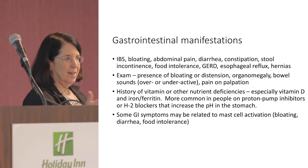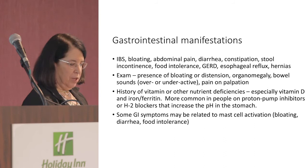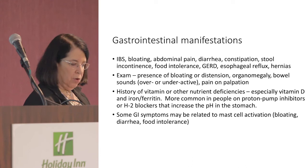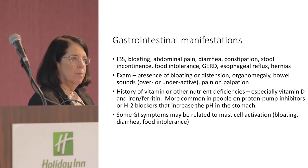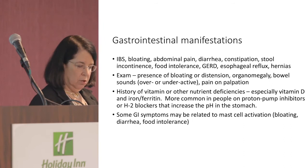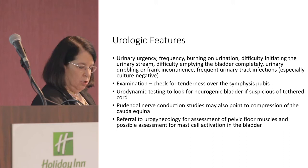Gastrointestinal manifestations are numerous: IBS, bloating, abdominal pain, diarrhea, constipation, and many others. Examination looks for bloating, organomegaly, bowel sounds, and possible vitamin deficiencies. Importantly, some GI manifestations — including bloating, diarrhea, and food intolerance — may be related to mast cell activation.